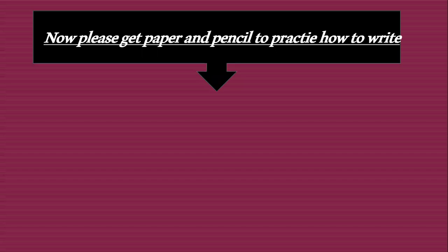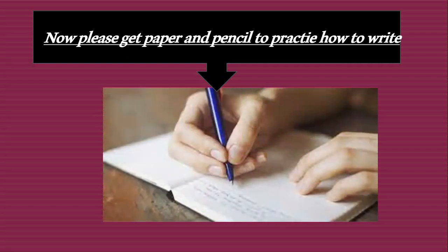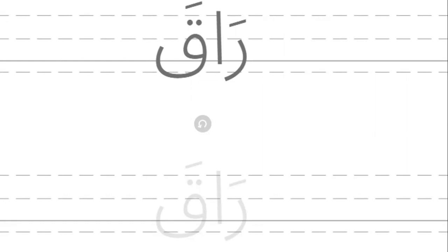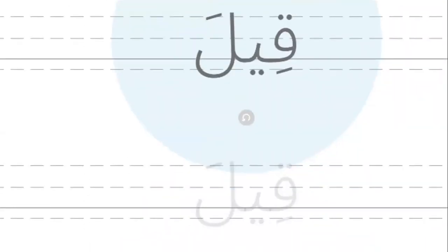Now please get paper and pencil to practice how to write short vowels and long vowels. Please write raqa. Can you write? Try to write raqa. Did you finish? Another word — qala. Please write qala. Did you finish? Another word — yaqulu. Try to write yaqulu.